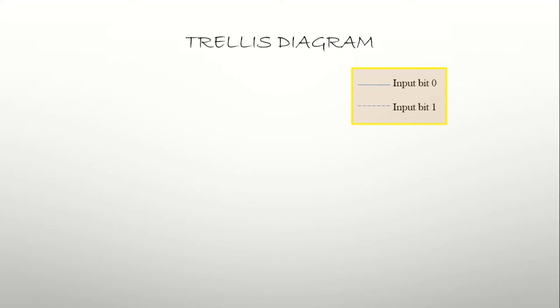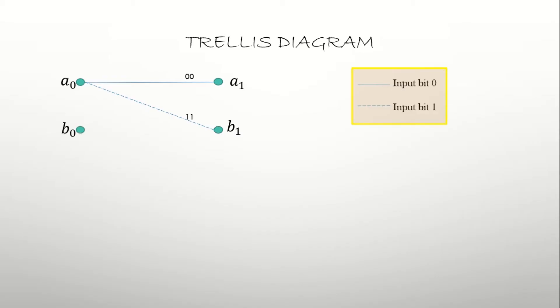The trellis diagram contains two things: input message bit 0 and input message bit 1. Zero is represented as a solid line and one is represented as a dotted line. In the trellis diagram we have two states: present state and next state. Starting with present state A — if the message bit is 0 (solid line) it stays at A and produces code 00; if the message bit is 1 it moves to B and produces code 11. If the present state is B and the input is 0 it moves to next state C producing code 10, and if input is 1 it goes to D producing code 01.